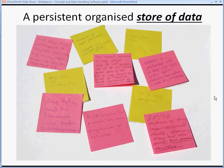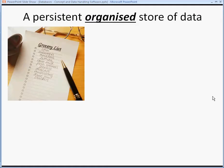These post-it notes are a store of data, but are they persistent? We might not know what that means yet. Are they organized? Probably not. When we think about databases being organized, if we think of our shopping list, I tend to write it in the order I go around the supermarket — fruit and veg first, then dairy — so I have an organized list to tick off everything I need.